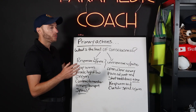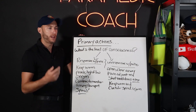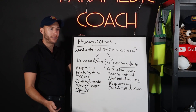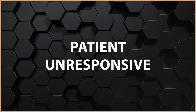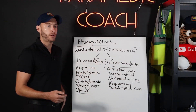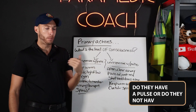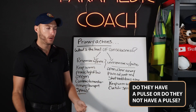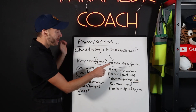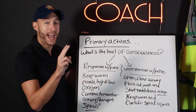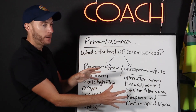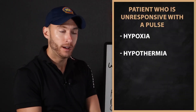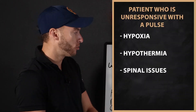Now the most likely scenario with a drowning patient is they're going to be unresponsive. They're not going to be breathing. The question is going to be: do they have a pulse or do they not have a pulse? We'll talk about cardiac arrest in a second. This is unresponsive, but they have a pulse. We've got to focus on hypoxia and hypothermia, and consider any spinal issues as the third priority.